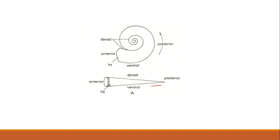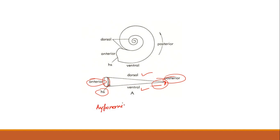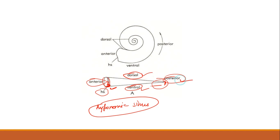The pointed closed end is the posterior end, while the open end is the anterior end. Now there are two more things: the dorsal side and the ventral side. The 'HS' refers to the hyponoic sinus — this is a depression. Wherever this depression is found, that side is known as the ventral side, and the opposite side is the dorsal side.